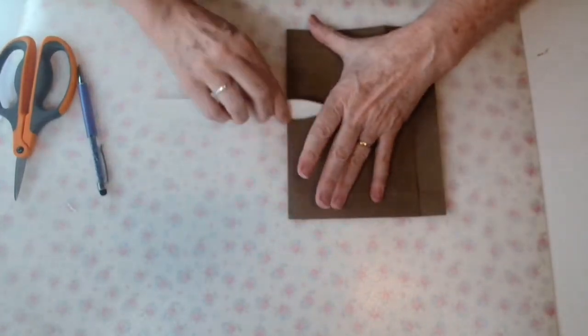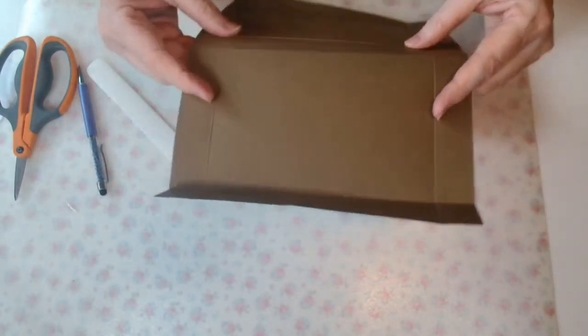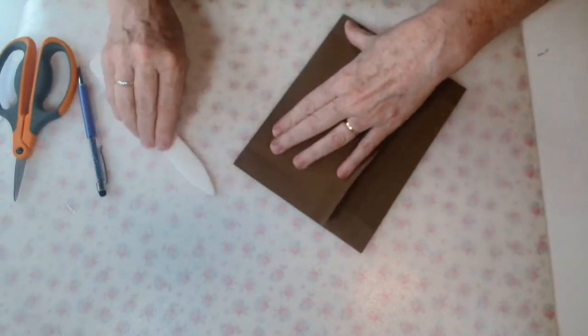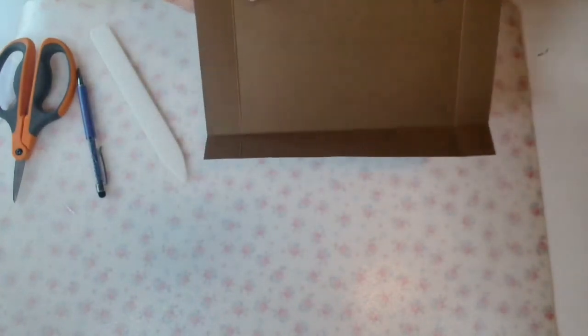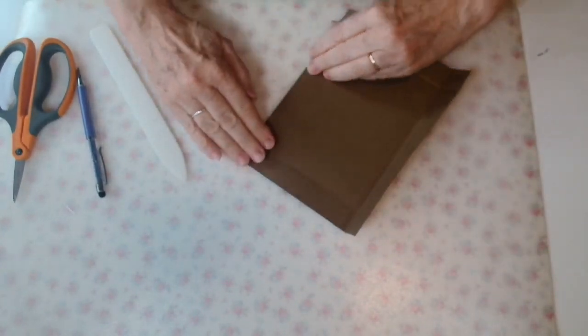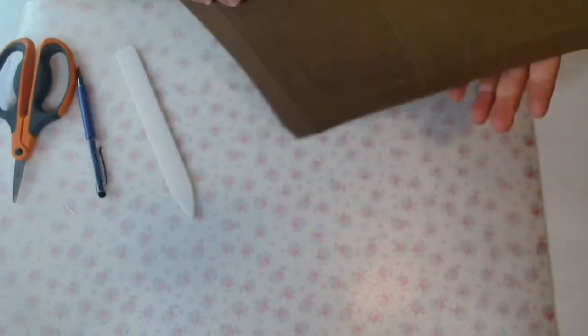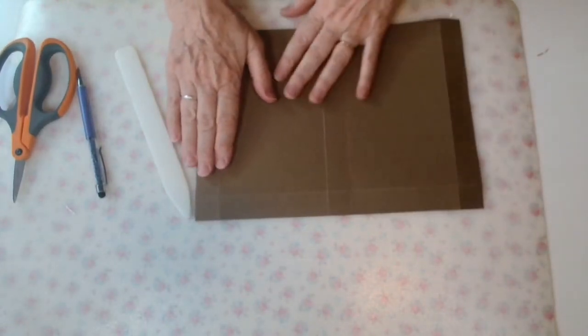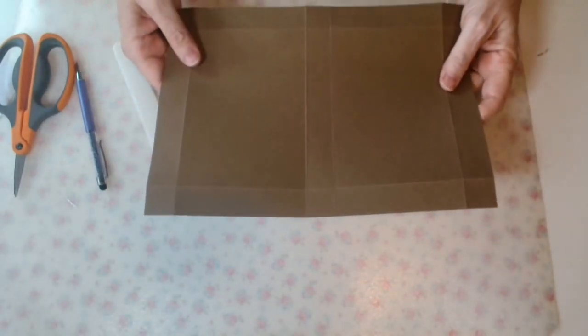Now with these center ones, because they act as the hinge part of your box, flip them over and burnish on the other side too. All right. That's all done. Now, looks like a flattened piece of box.